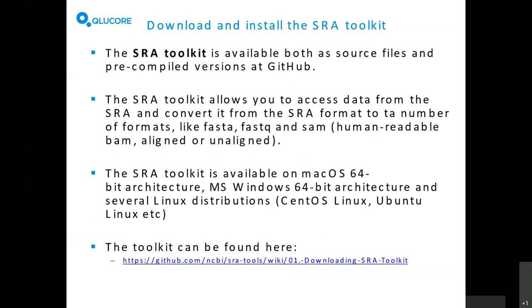What is the SRA toolkit? It's a piece of software you can download both as source files and as a pre-compiled version from GitHub, and it allows you to access data from the SRA and convert it into a number of different formats — like FASTA files, FASTQ files, and also SAM files. This toolkit is available on macOS, MS Windows, and also in different Linux distributions. There will be a document sent out with the link, so you don't need to take notes.